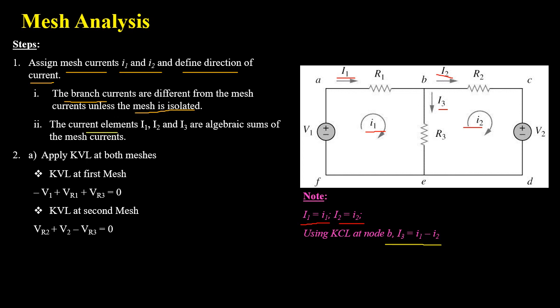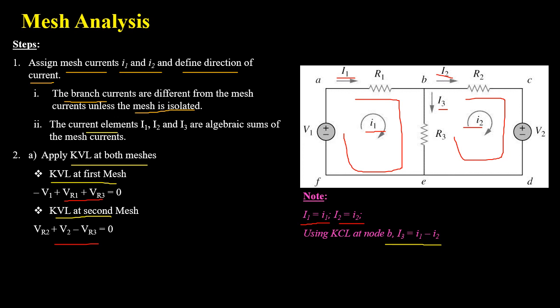As the second step of mesh analysis, we apply KVL. The KVL equation at loop one, with assigned mesh current i1, is: minus V1 plus VR1 plus VR3 equals 0. The KVL equation at the second mesh, with assigned mesh current i2, is: VR2 plus V2 minus VR3 equals 0.